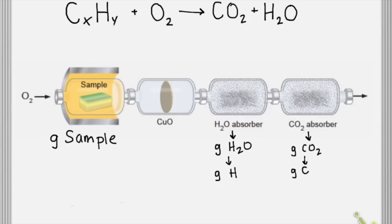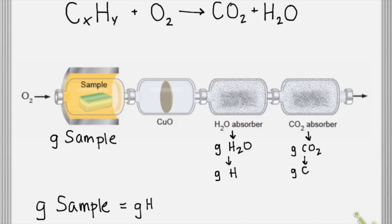By the conservation of mass, the total grams of our sample would have to be equal to the grams of all the individual pieces added up — so it would be equal to the grams of hydrogen plus the grams of carbon. We can start with a compound and make predictions about how many grams of carbon dioxide and how many grams of water will we get.